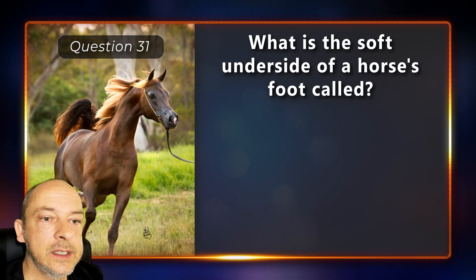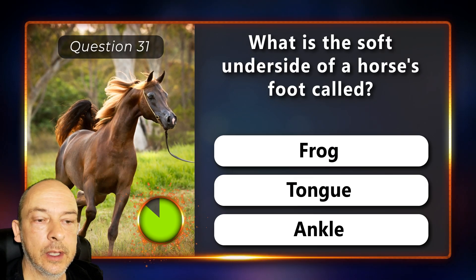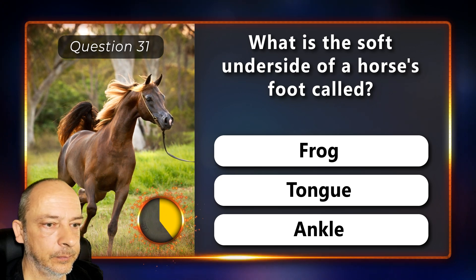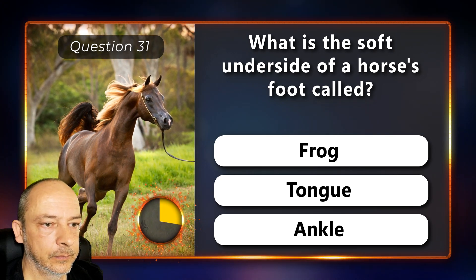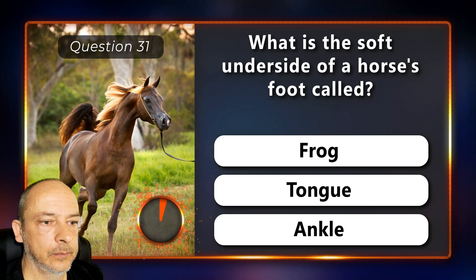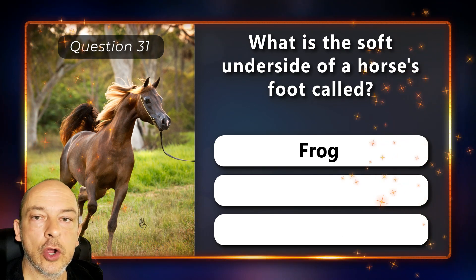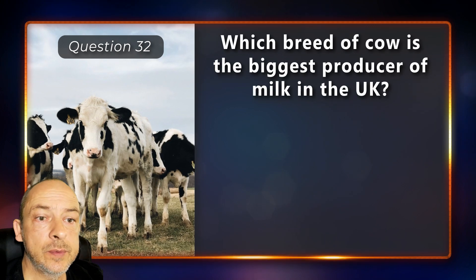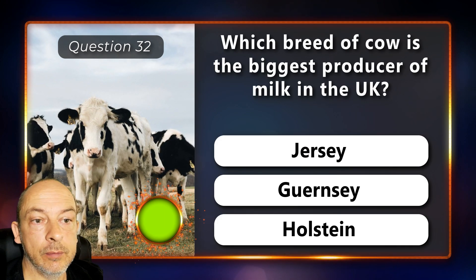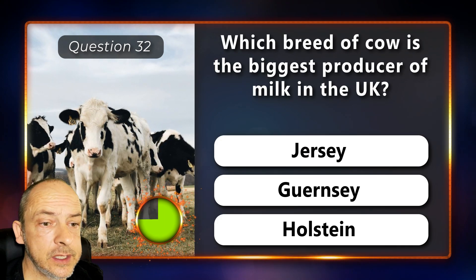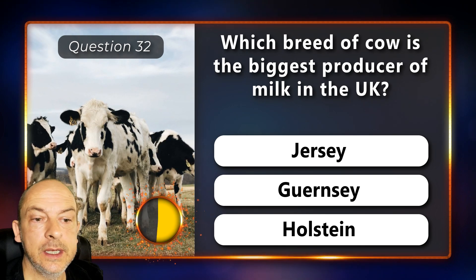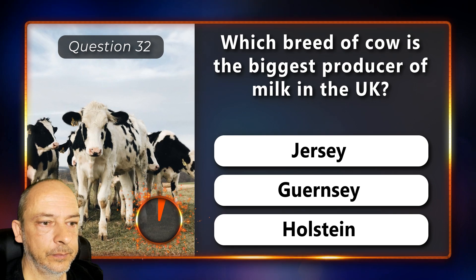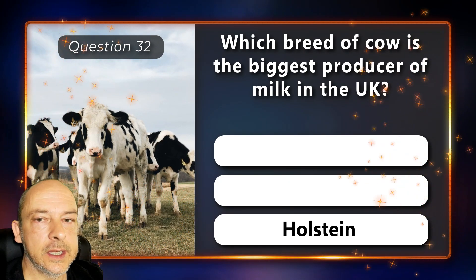What is the soft underside of a horse's hoof called — the frog, the tongue, or the ankle? It's called the frog. Which breed of cow is the biggest producer of milk in the UK — the Jersey, the Guernsey, or the Holstein? It's the Holstein.